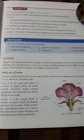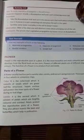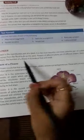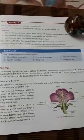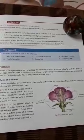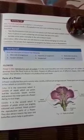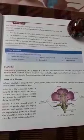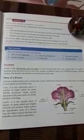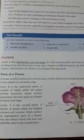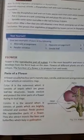Hello children, today we'll study about flower. Flower is the reproductive part of a plant and it is the most beautiful and most attractive part of a plant because it is very colorful. Flowers of different plants are of different shapes, sizes, and different colors. The function of a flower is to produce fruit and seeds.